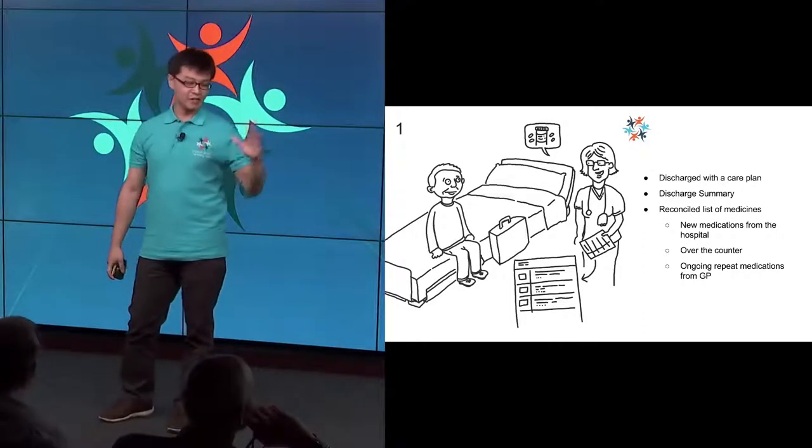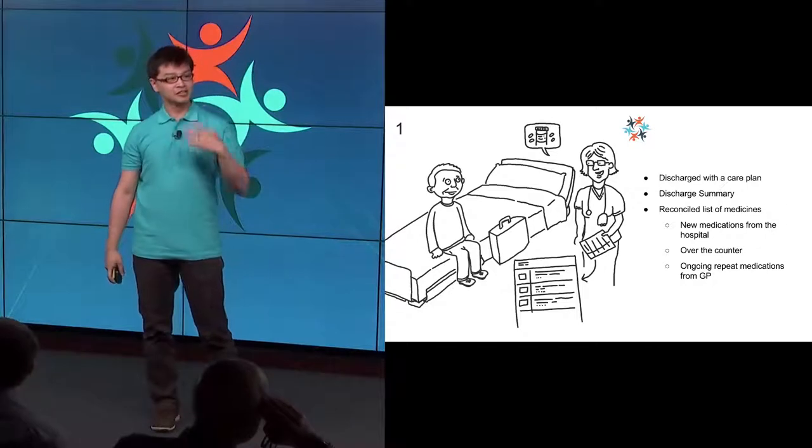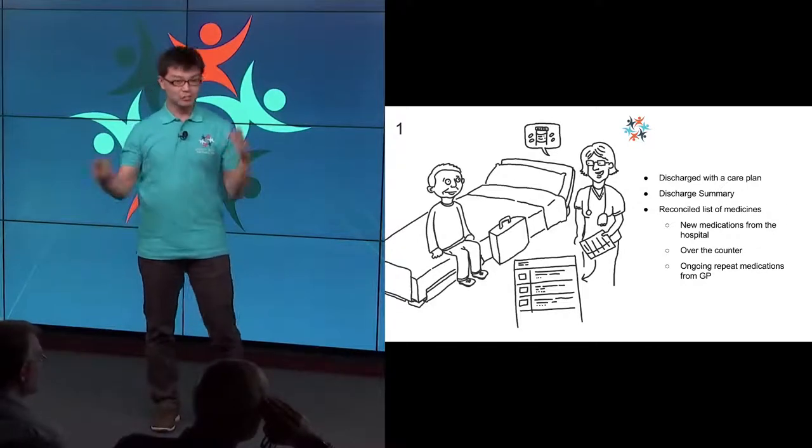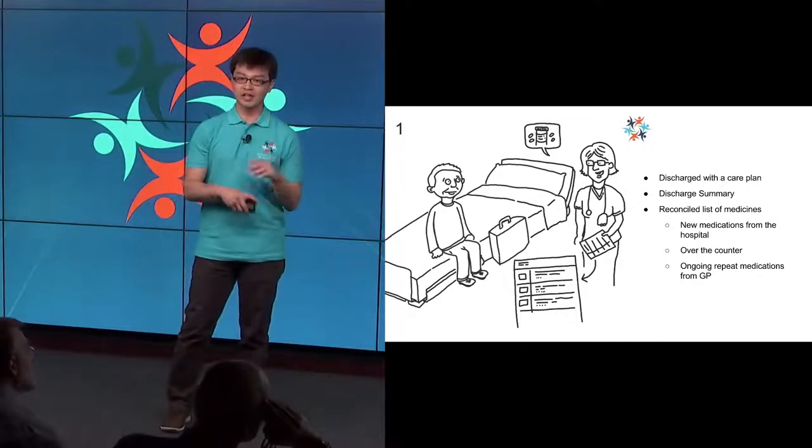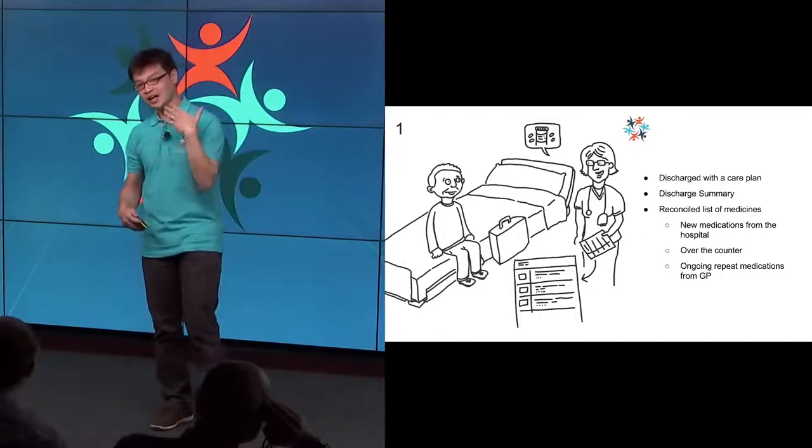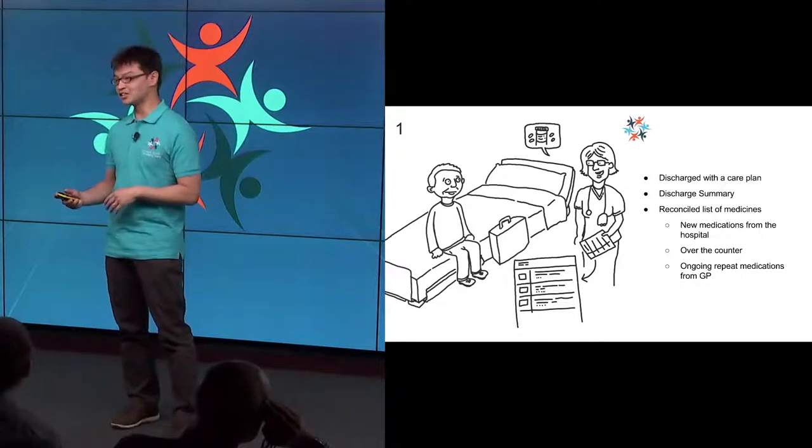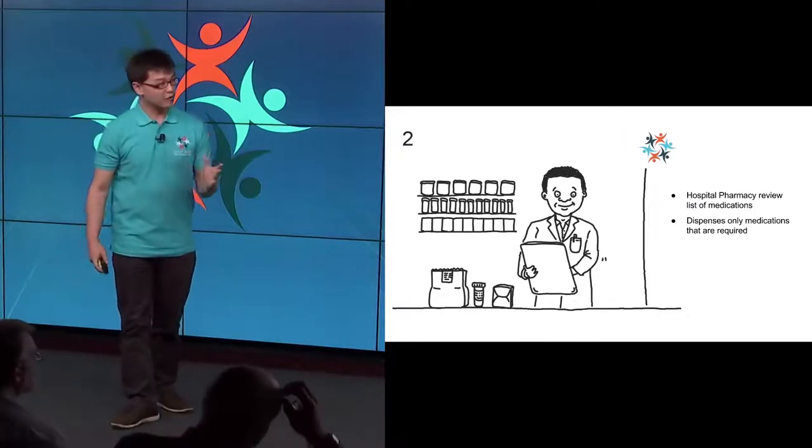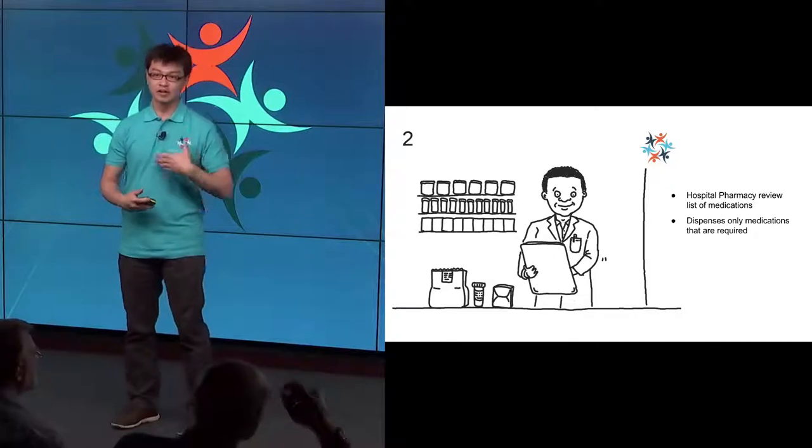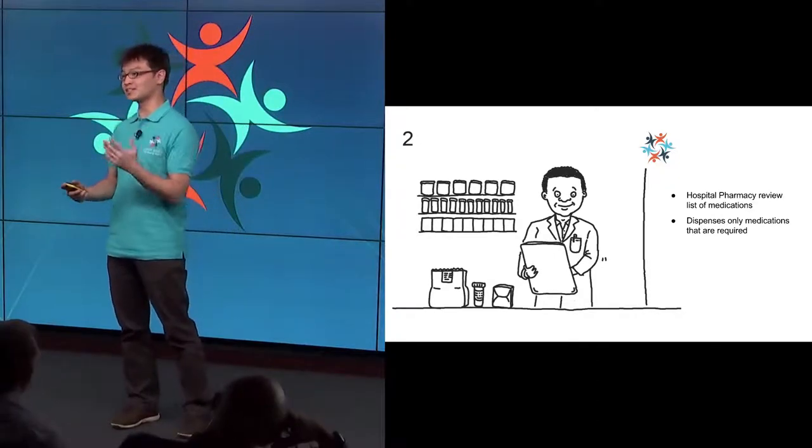The FY2 on the ward has discharged Michael with a care plan and discharge summary. To bring it all together, especially for the medication list, they need to combine any new medications started in hospital, new repeat medications for the GP, and over-the-counter medication. The hospital pharmacy will then go through this, see what Michael has, what he doesn't have, what he needs, and dispenses the medication.